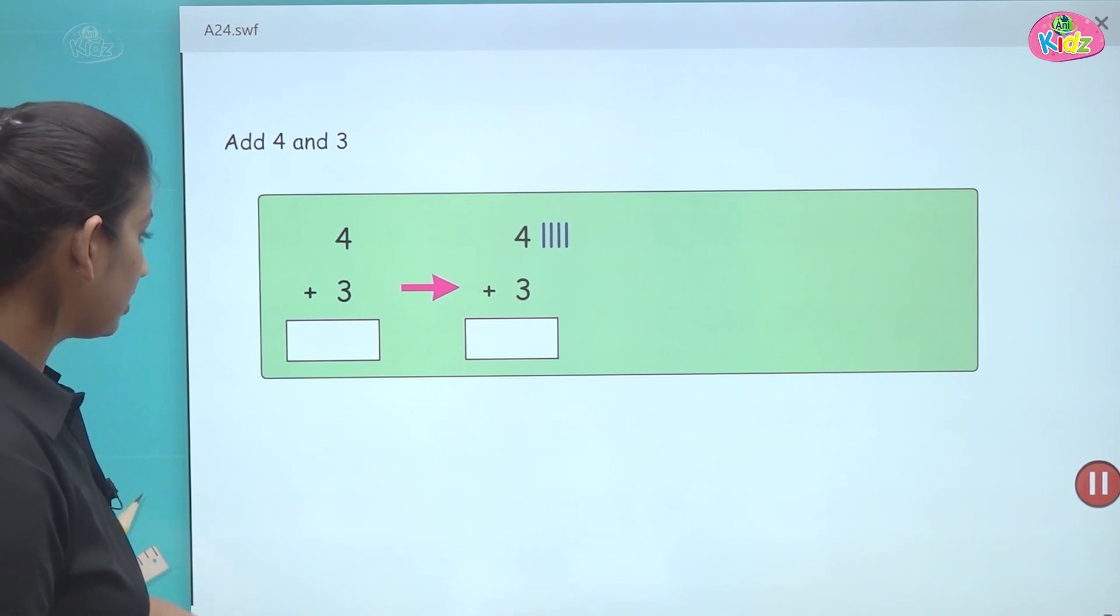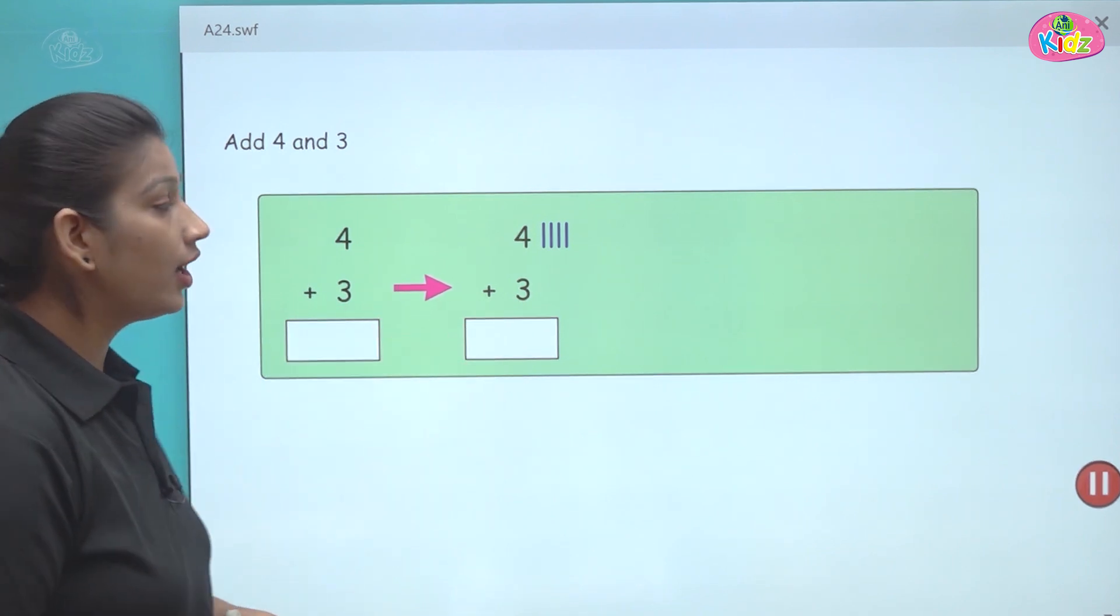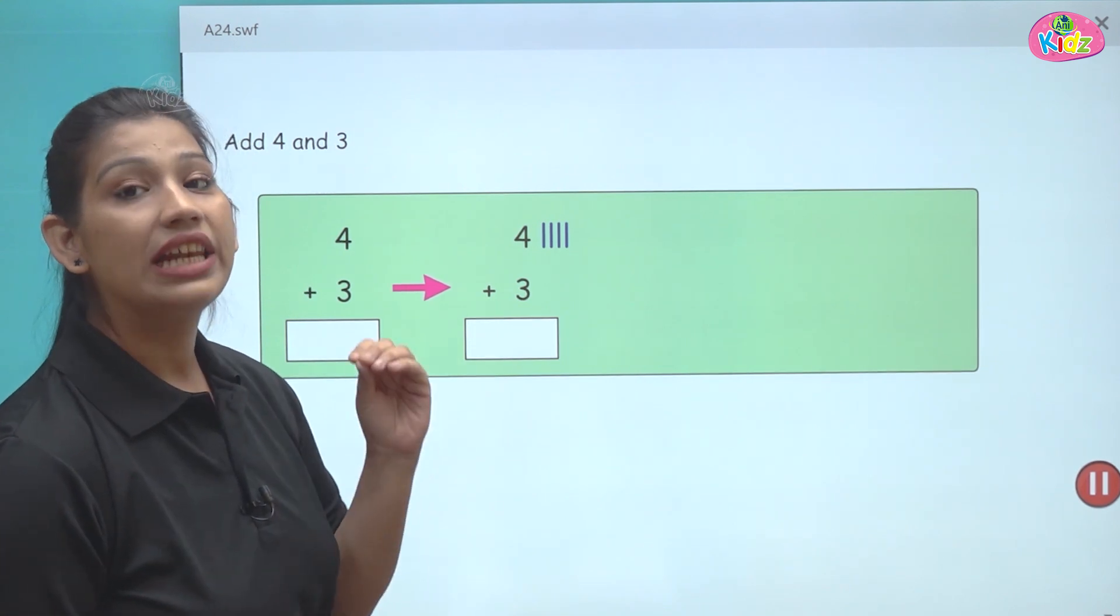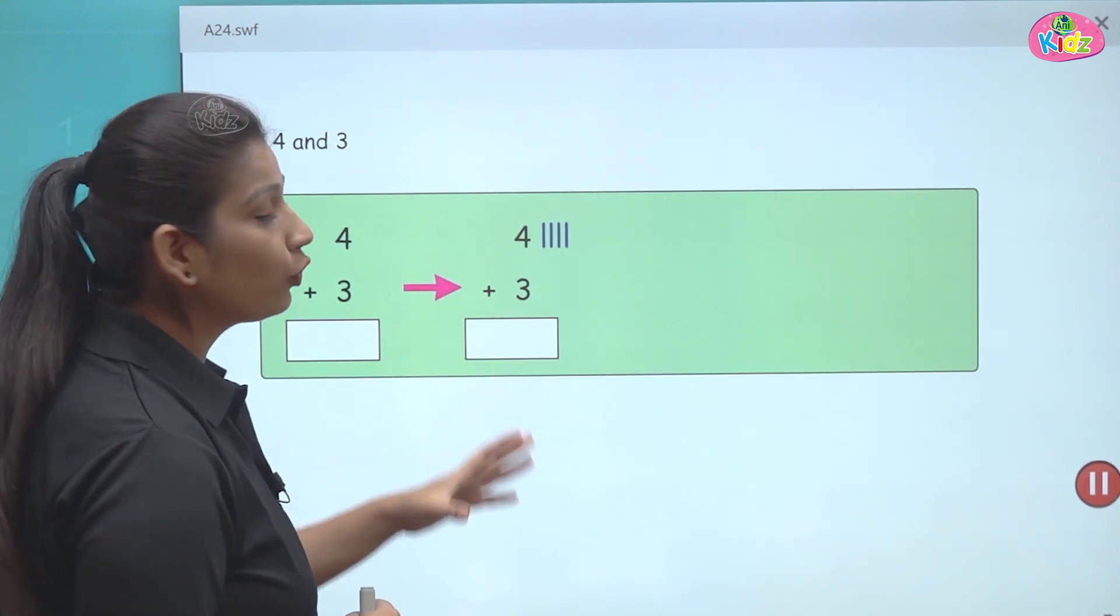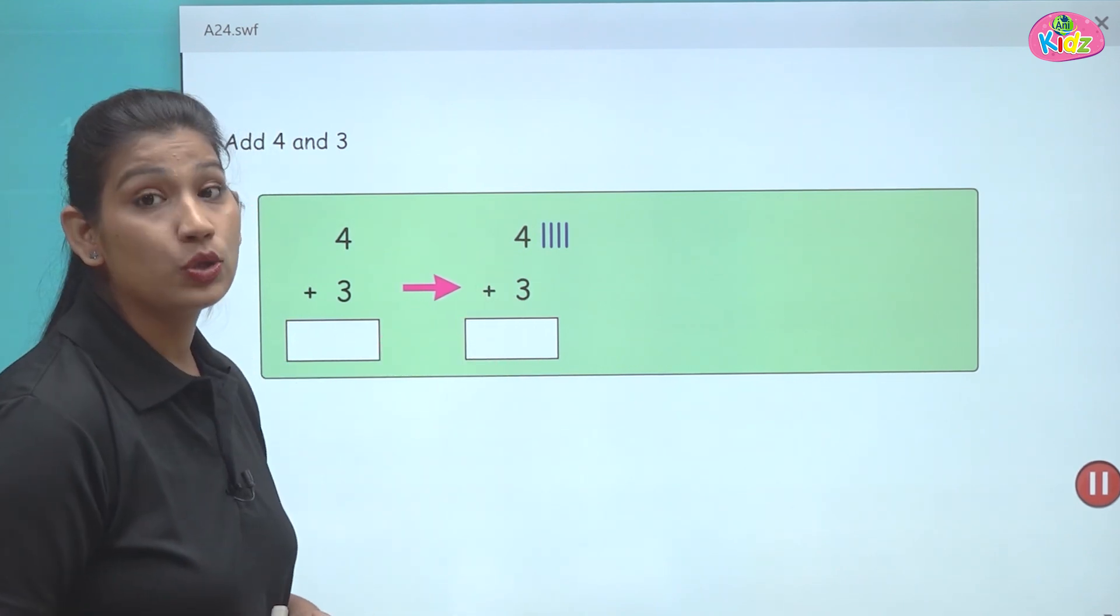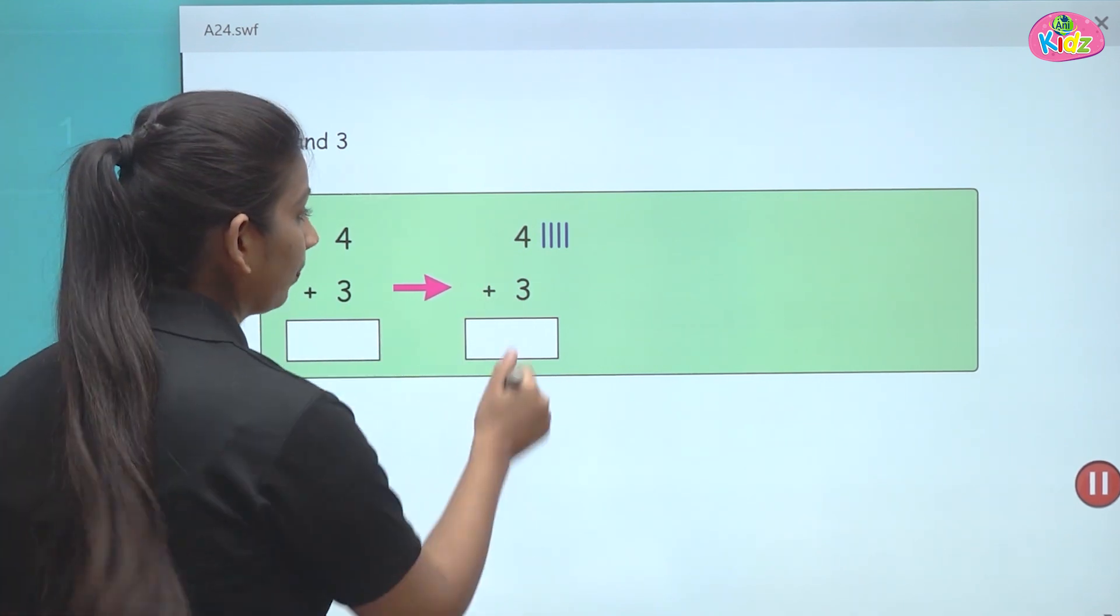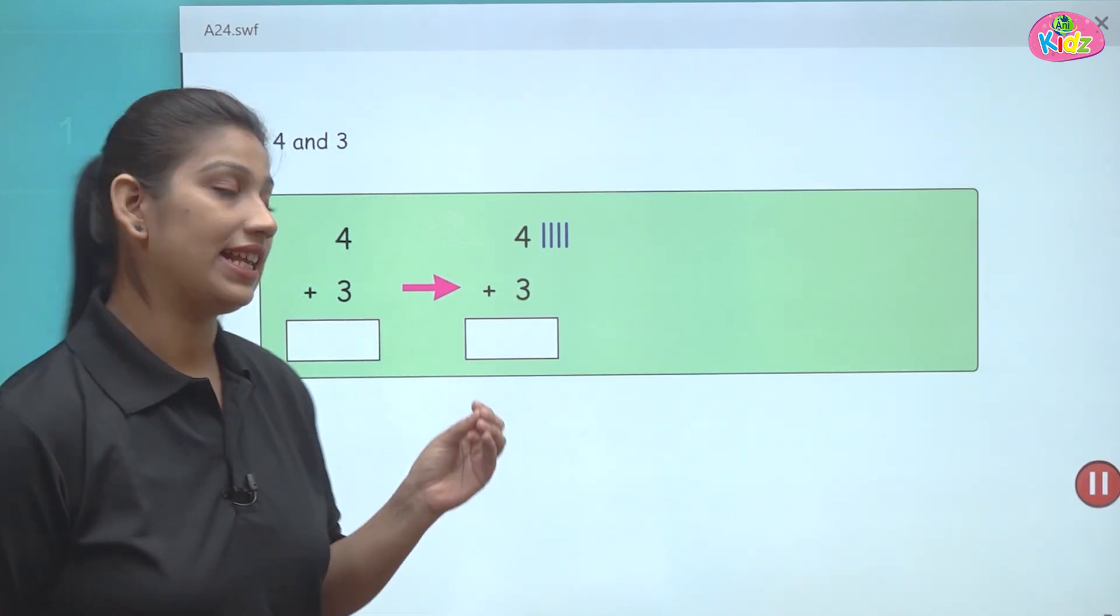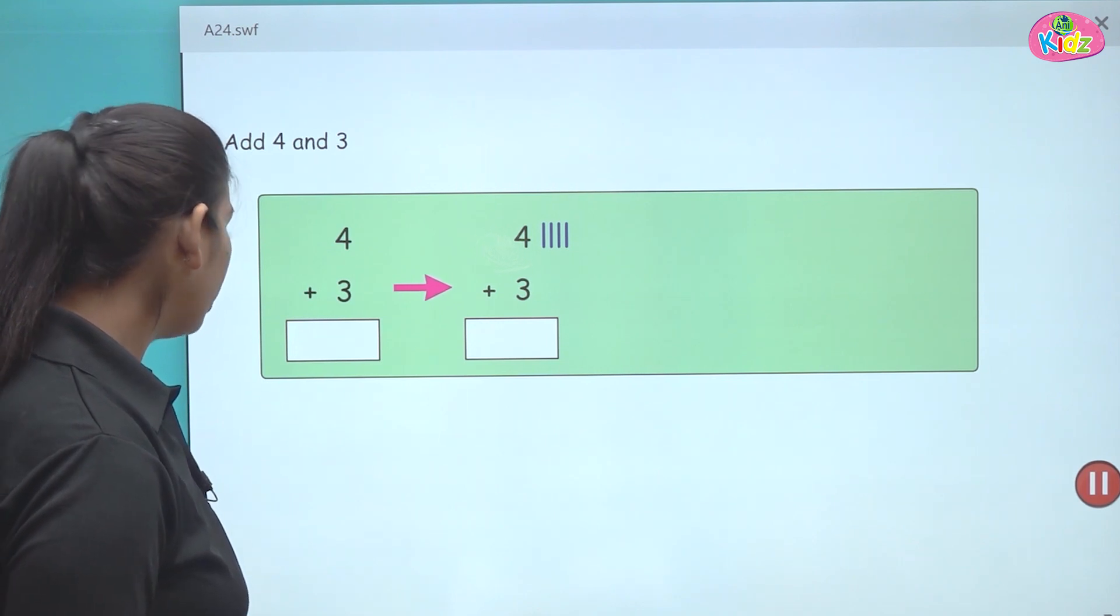This our next step is to go like this. Here you can see four plus three. Now you have to draw lines for the numbers. How you will add it? You can draw the lines. Here we have number four. So we will draw four lines. One, two, three, four. Our first step is to draw lines. We have drawn four lines.